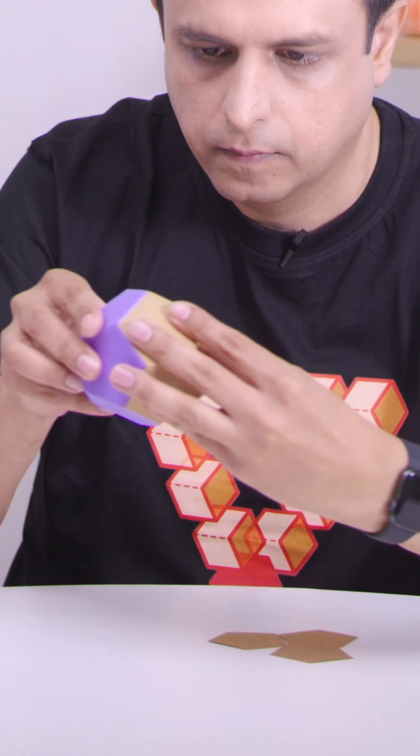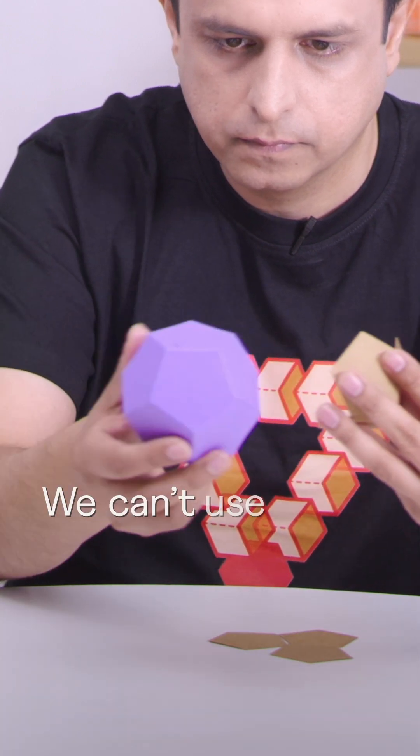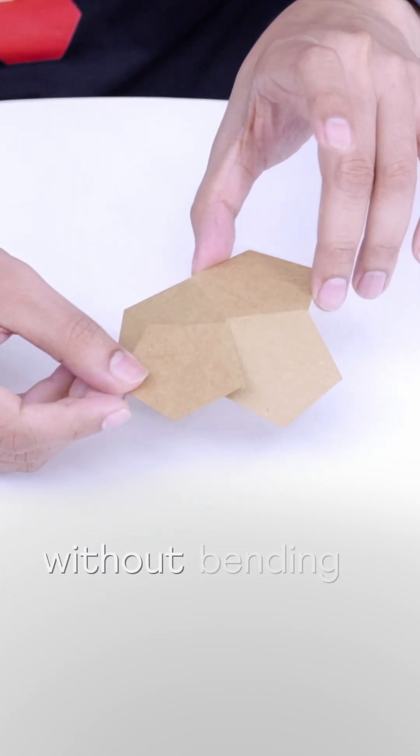Continuing with pentagons, we can form a dodecahedron. We can't use four or more pentagons at a corner without bending the faces.